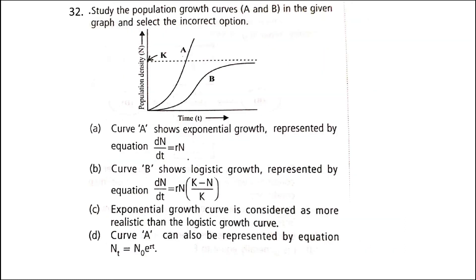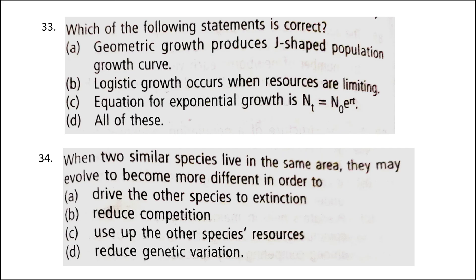Next: study the population growth curves A and B in the given graph and select the incorrect option. The incorrect option is option C: exponential growth curve is considered more realistic than logistic growth curve. Since resources of growth for most animal populations become limiting sooner or later, the logistic growth model is more realistic. Next: which of the following statements is correct? A. Geometric growth produces a J-shaped population growth curve. B. Logistic growth occurs when resources are limiting. C. Equation for exponential growth is Nt = N₀e^(rt). The correct answer is option D — all of these.